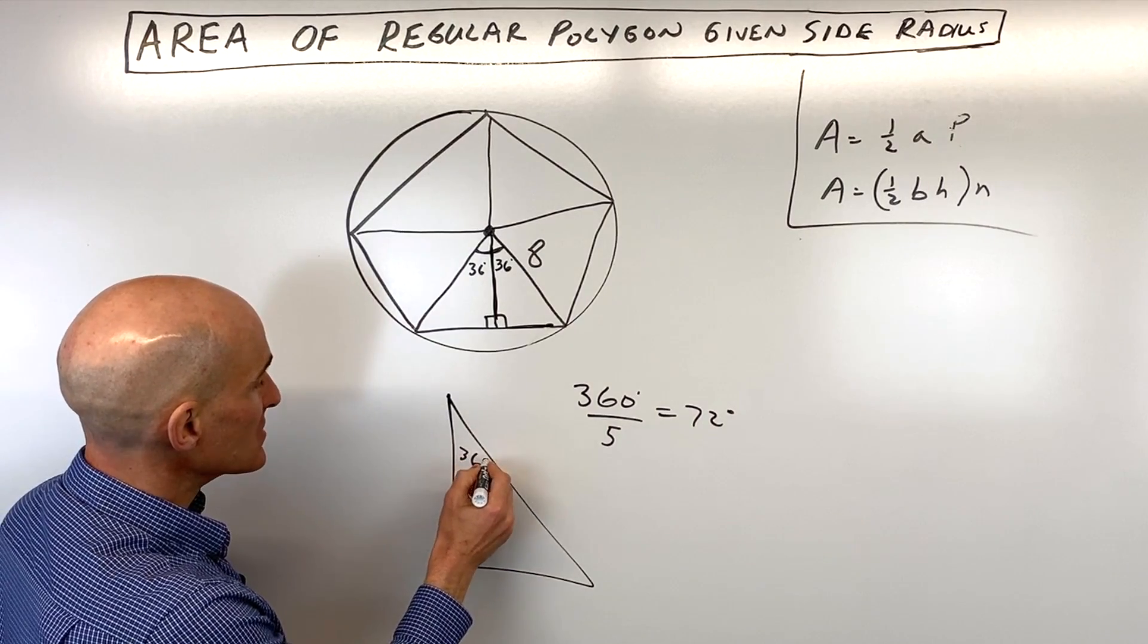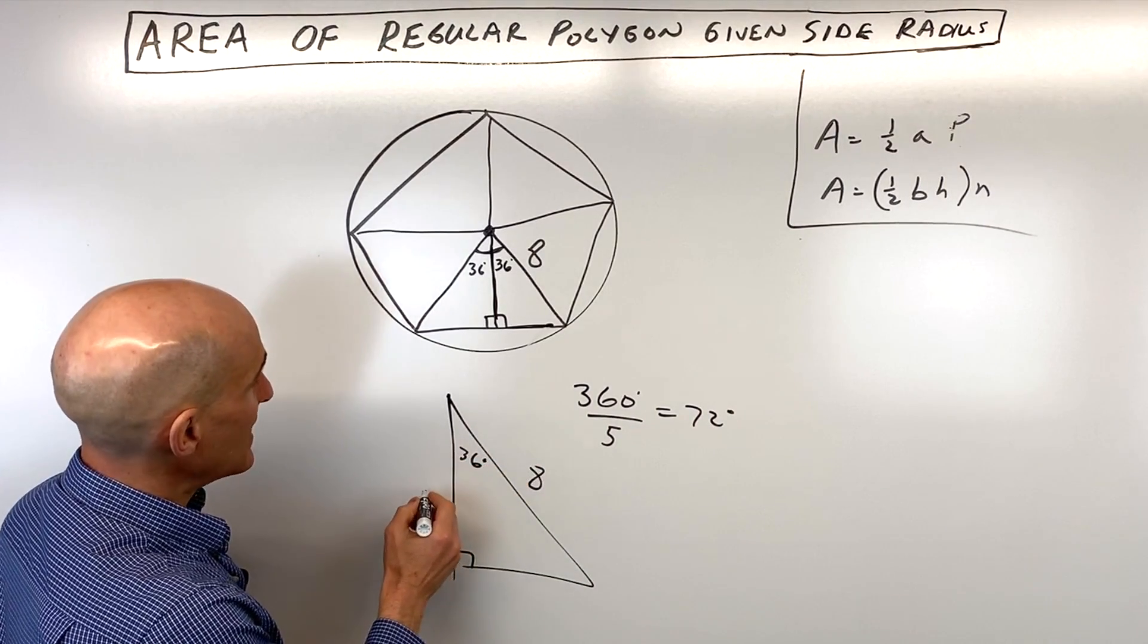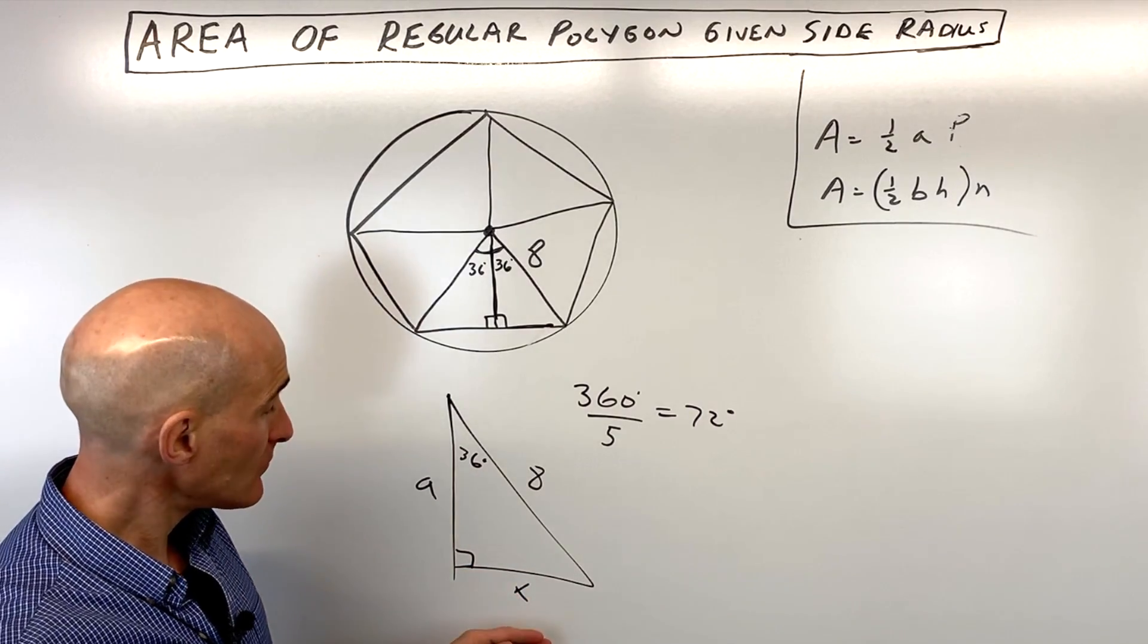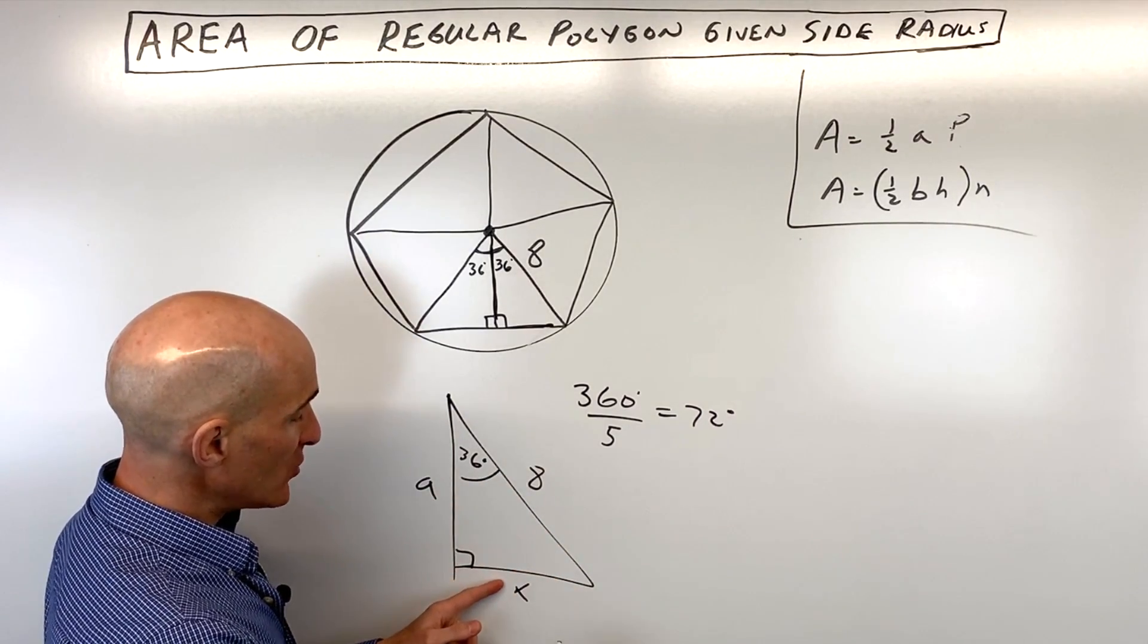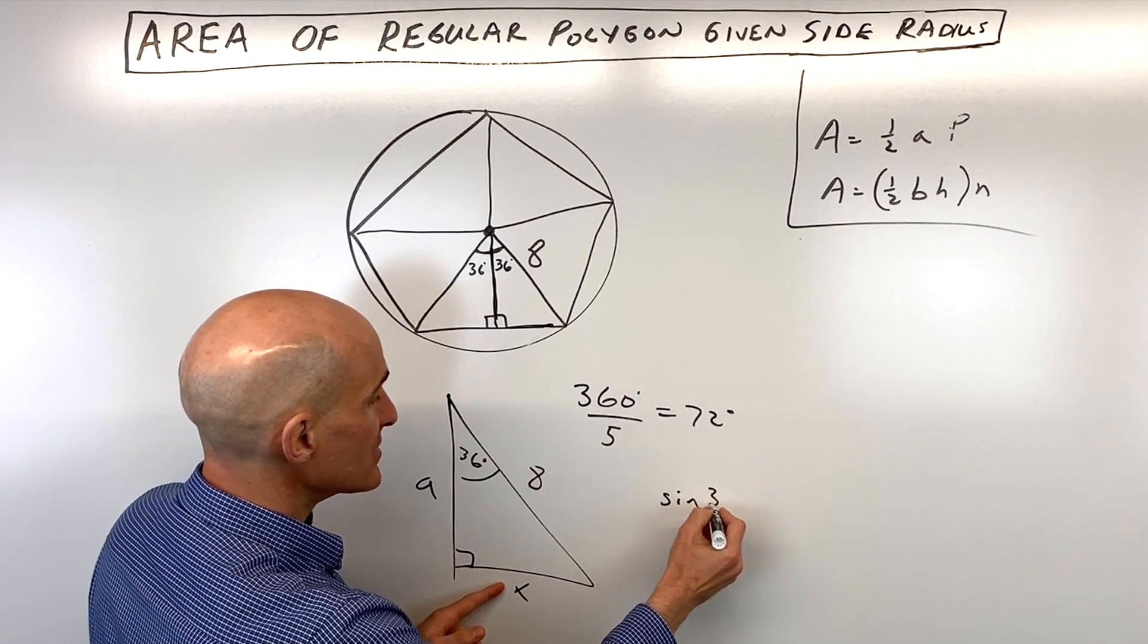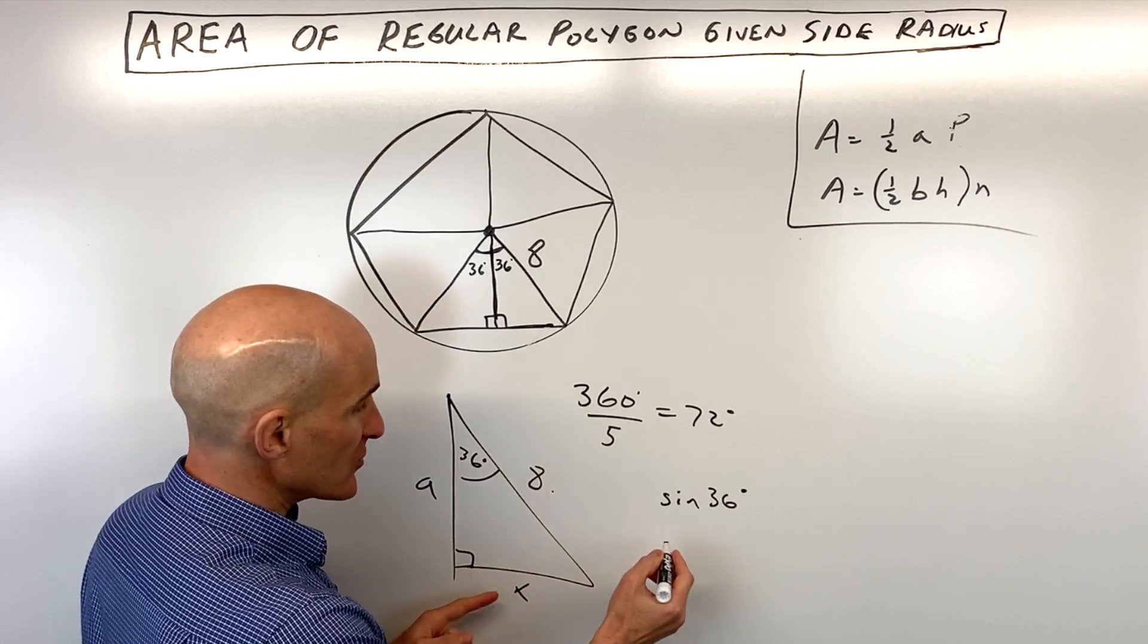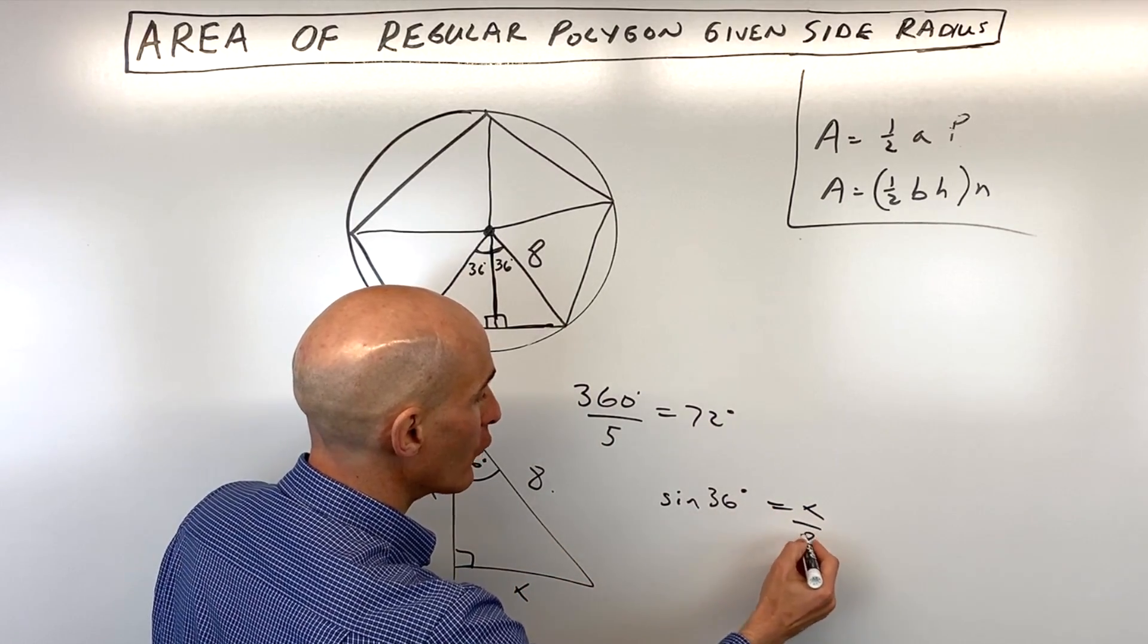So we have 36 degrees. Let's call this 8. Let's call this A for apothem, and let's call this X for the side length. So we're going to use a little bit of trigonometry here. Let's start off by doing the sine. So the sine of 36 degrees equals the opposite side over the hypotenuse. So that's going to equal X over 8.